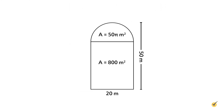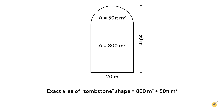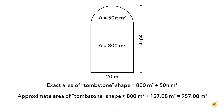Now that we know the area of both objects that make up our composite shape, we can add them together to get our total area. So the exact area of our tombstone shape is 800 plus 50 pi square meters. To get a more useful approximate value, we can multiply 50 by an approximation of pi using the key on our calculator to get an approximate area of 157.08 meters squared. So the approximate area of our tombstone shape is 800 square meters plus 157.08 square meters, which is equal to approximately 957.08 square meters. Notice that we used the approximately equal to symbol since our semicircle area is now an approximation.